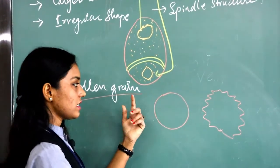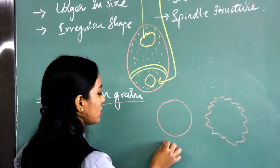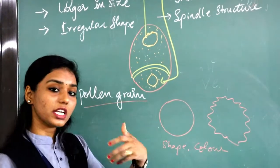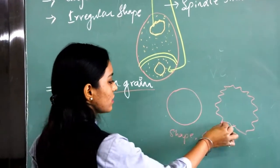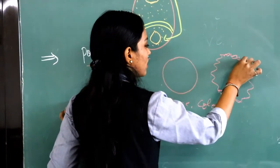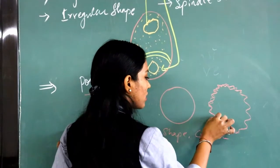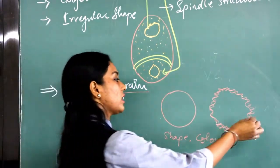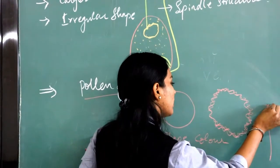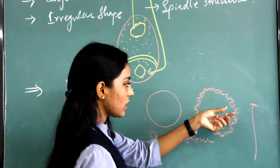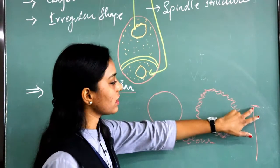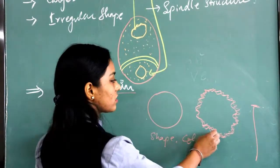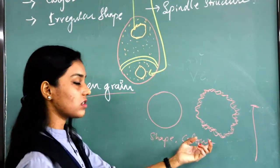Pollen grains from different flowers differ in shape and color. For example, thorn-like structures are observed in Datura — Datura's pollen grain has a long leg-like structure. If you take the powdery part of this pollen and observe it under a microscope, you will see different sizes and structures of pollen grains from different flowers.